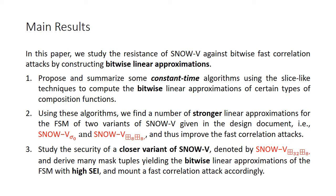SNOWV is a new member in the SNOW family of stream ciphers. In this paper, we study the resistance of SNOWV against bitwise faster correlation attacks by constructing bitwise linear approximations. First, we propose and summarize some constant time algorithms using slice-like techniques to compute the bitwise linear approximations of certain types of composition functions. Then, using these algorithms, we find a number of stronger linear approximations for the FSM of two variants of SNOWV given in the design document.